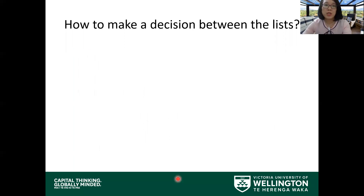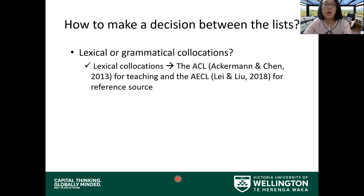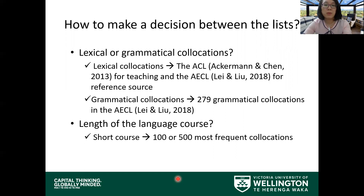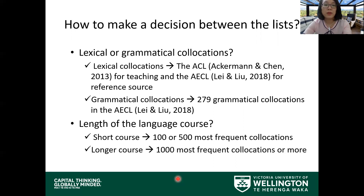So, for the question of how to make a decision between the lists, the answer is: it depends on teaching and learning purposes. For example, if the focus of a language course is lexical academic collocations, then the AECL would be more suitable for teaching. But if grammatical academic collocations are the target, then we can make use of the list by Lei and Li. It also depends on the length of the course — for a short course, the 100 or 500 most frequent collocations should be an appropriate learning target, while for a longer course, we can aim for the 1,000 most frequent collocations or more.